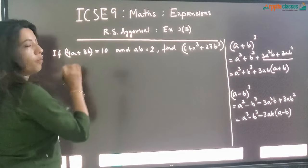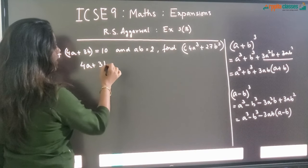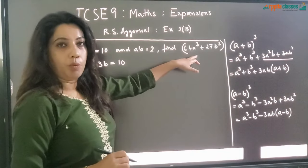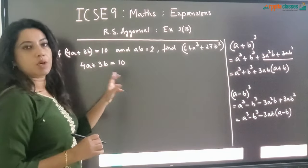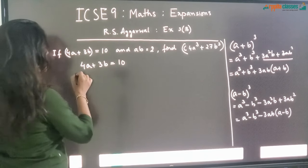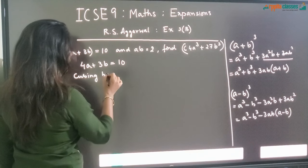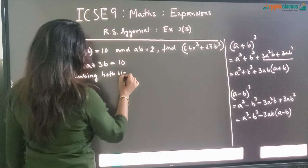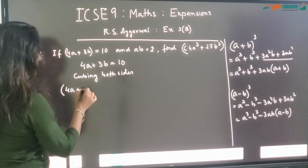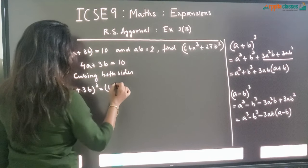Now, 4A plus 3B is equal to 10 is given. Since we have to find out the cube, we will cube both sides of this expression. Cubing both sides, we get 4A plus 3B whole cube is equal to 10 the whole cube.